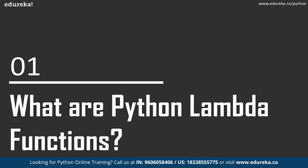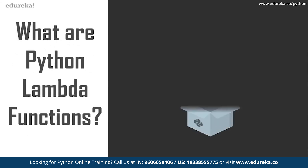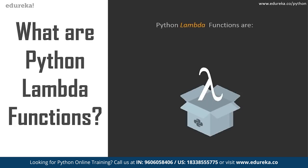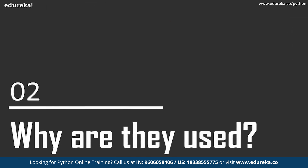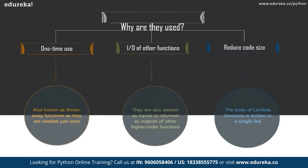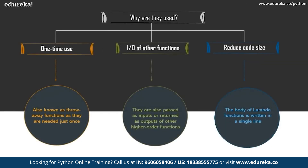Let's move on towards the first topic of the session, which is understanding what exactly are Lambda functions. Python Lambda functions are functions that do not have any name. They are also known as anonymous or nameless functions. The word Lambda is a keyword that specifies what follows is anonymous. The main purpose of anonymous functions comes into picture when you need some function just once — they are created wherever they are needed, which is why Python Lambda functions are known as throw-away functions.